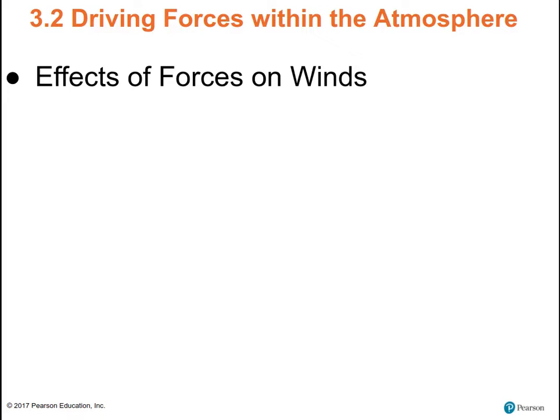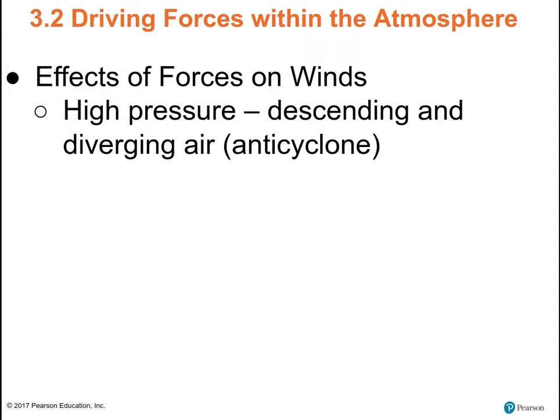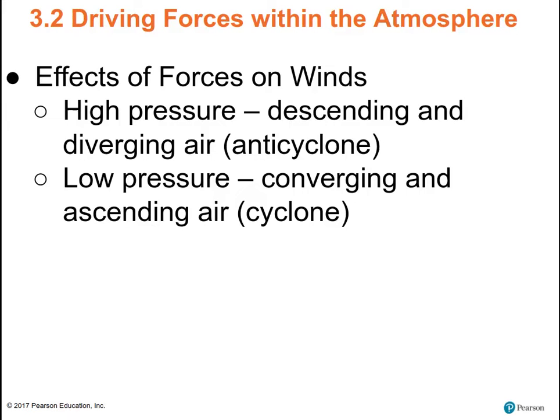Putting all these together: when there is high pressure, the air is descending and diverging. Where there's low pressure, the air is converging and ascending. Air flowing out of high pressure is called an anticyclone. Air flowing into an area of low pressure is cyclonic flow or a cyclone — that's also the term for hurricanes in the southern hemisphere, though cyclonic airflow just refers to air flowing into an area of low pressure, rotating counterclockwise in the northern hemisphere and clockwise in the southern hemisphere.